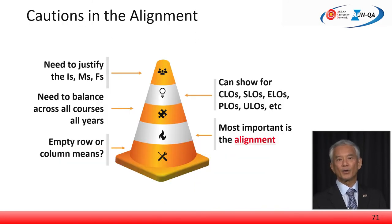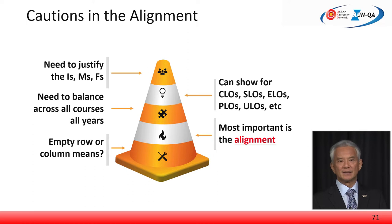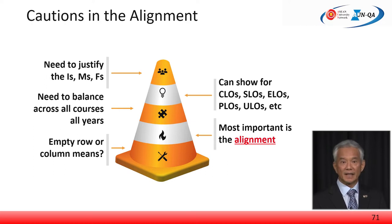What is important in a courses to ELO map? You are free to use any mapping scheme — it can be I, M, and F, or 1 to 5. Whichever scheme is used, the value entered needs to be justified. This is of underlying importance. The assessors would ask: why are there so many Fs? Is that really the case?